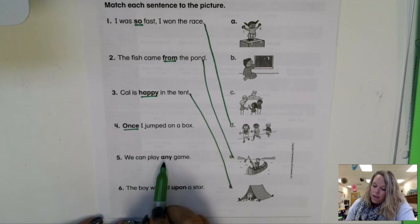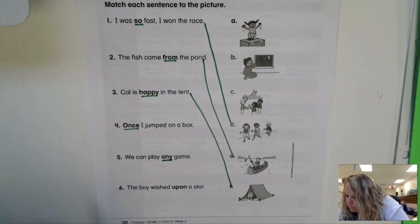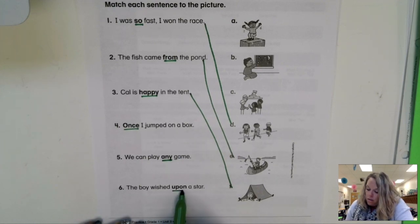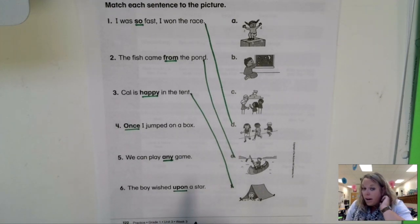Five, we can play any game. We can play any game. And number six says, the boy wished upon a star. The boy wished upon a star.